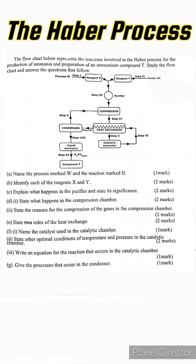Now let's start. The flowchart below represents the reactions involved in the Haber Process for the production of ammonia and preparation of an ammonium compound T. Study the flowchart and answer the questions that follow.